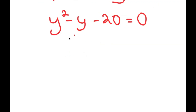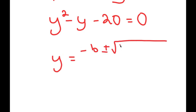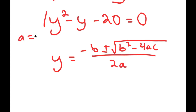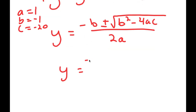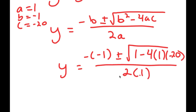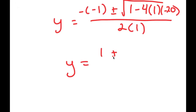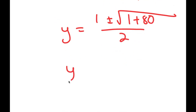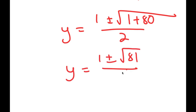To solve this, I'm going to be using the quadratic formula, which is negative b plus or minus the square root of b squared minus 4ac, all over 2a. In this case, a is 1, b is negative 1, and c is negative 20. So I get y equals negative negative 1 plus or minus the square root of negative 1 squared — which is positive 1 — minus 4 times 1 times negative 20, all over 2 times 1.